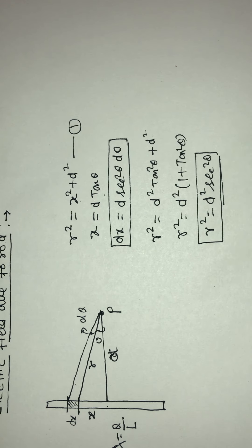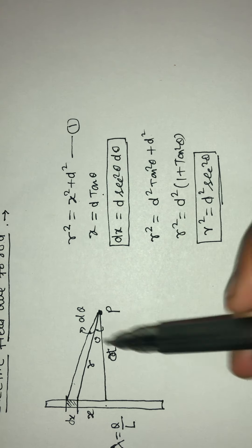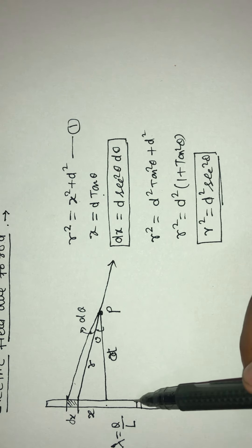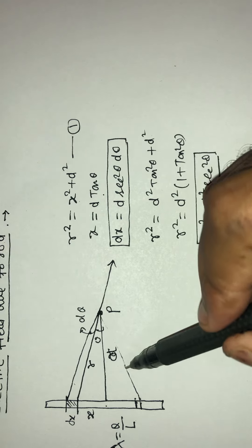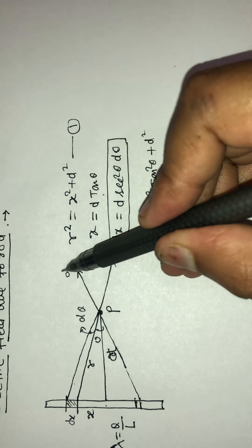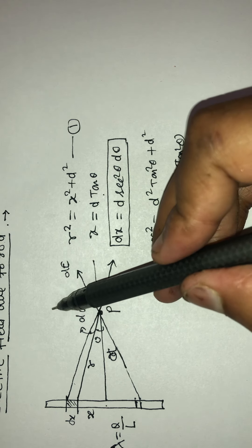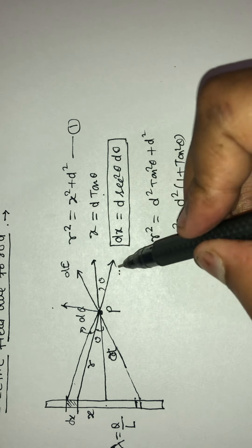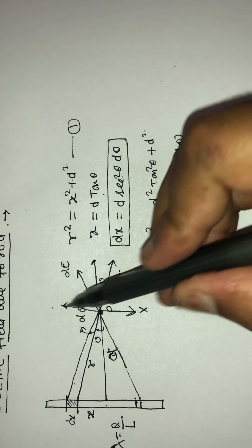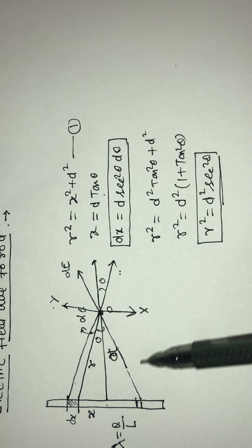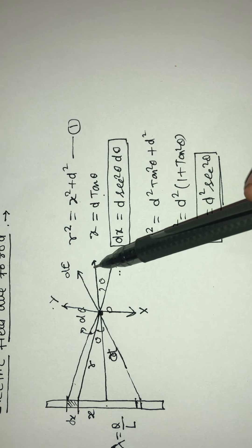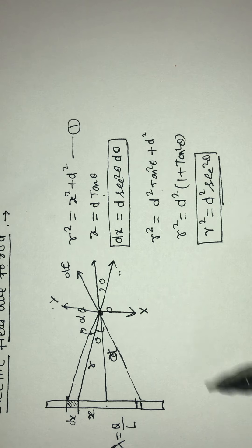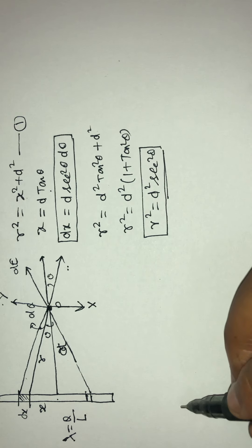Now I want to find out the electric field at this point due to this small element. The direction of the electric field will be like this. If I take another element over here, the direction of electric field due to that element will be in this direction. If I divide the electric field into two components — one along this axis and another perpendicular to this — the perpendicular components cancel out. So I get two dE·cos(theta) contributions, one due to each symmetric element.